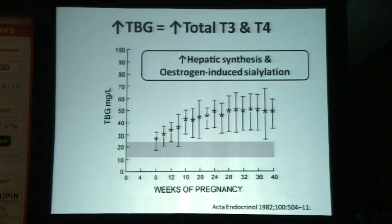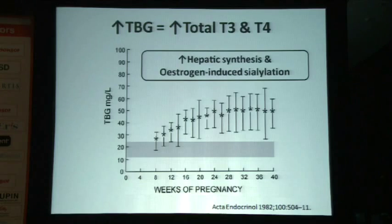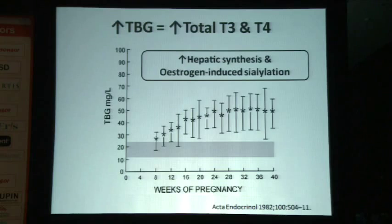Some physiological changes explain this pattern of thyroid function tests. One is the increase in thyroxine binding globulin (TBG). About 60-70% of thyroxine is bound by TBG, and that rises in pregnancy because of estrogen, which not only increases synthesis but also decreases the degradation of TBG — thereby elevating TBG levels. Consequently, total T4 and total T3 levels rise from early pregnancy until a peak around mid-second trimester, then plateau.